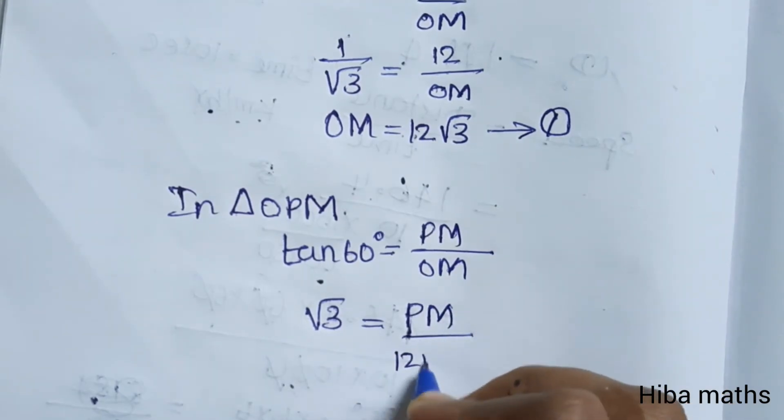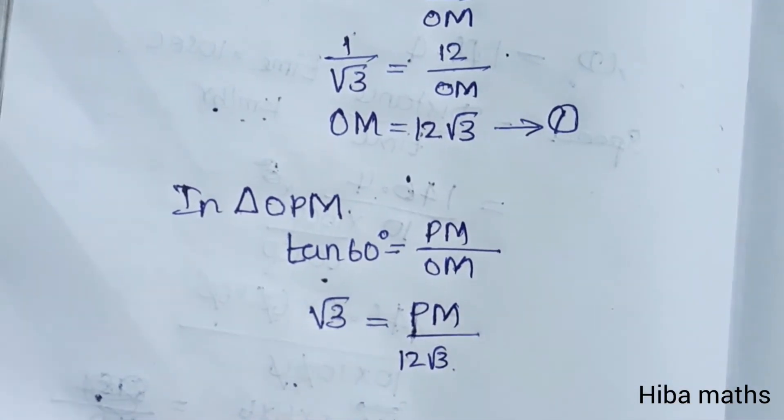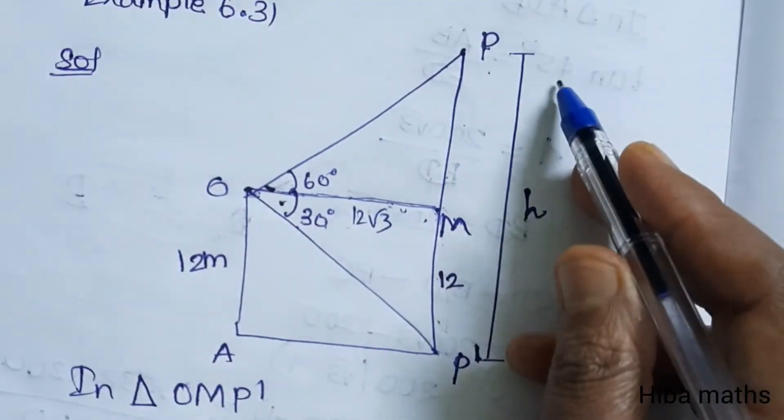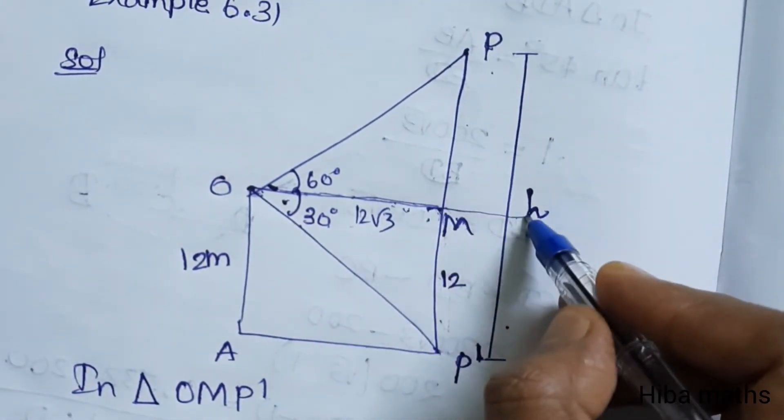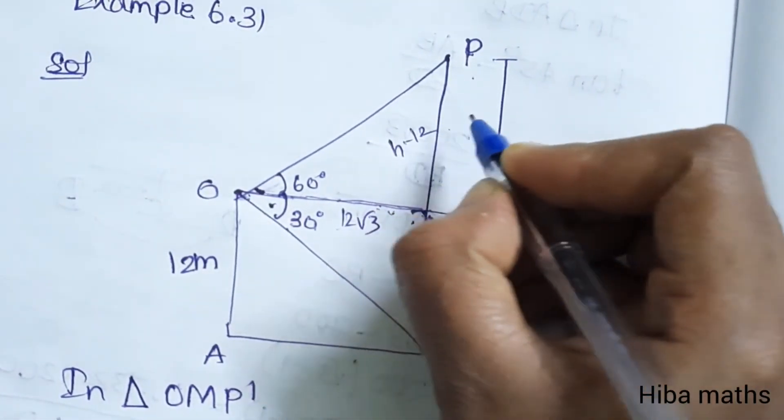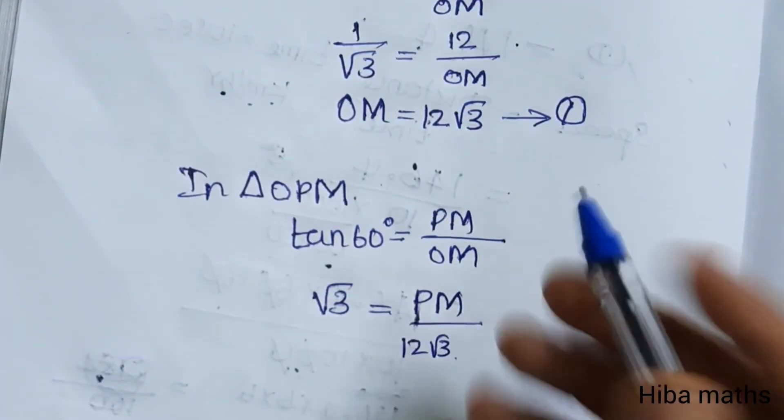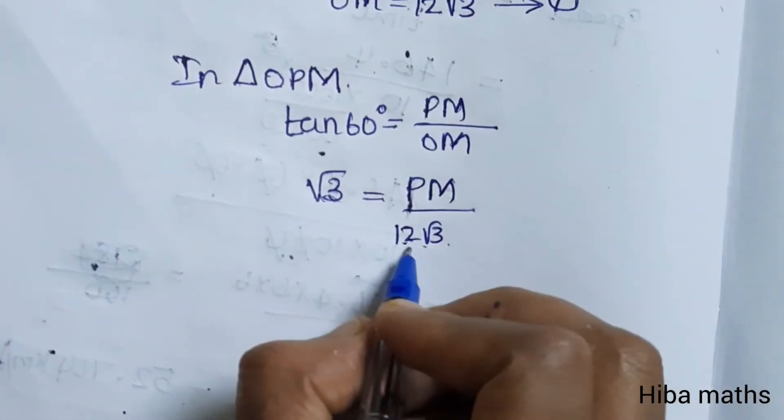12 root 3 times root 3 is equal to PM. H minus 12 equals PM, so root 3 times root 3 is 3.